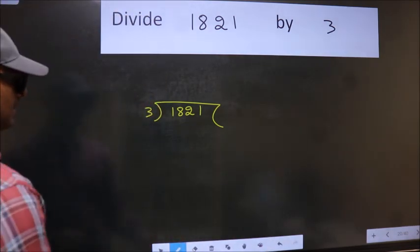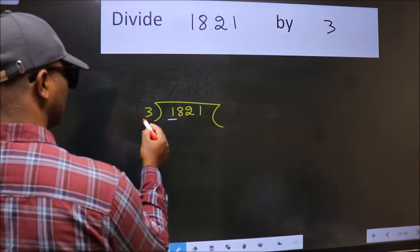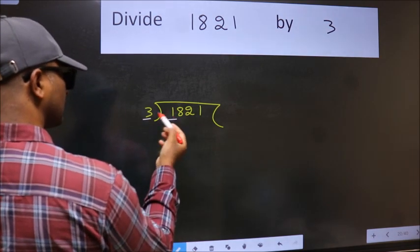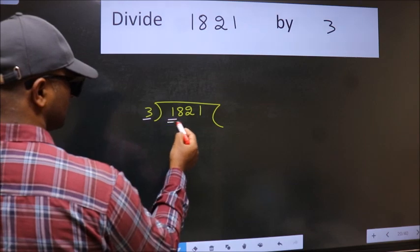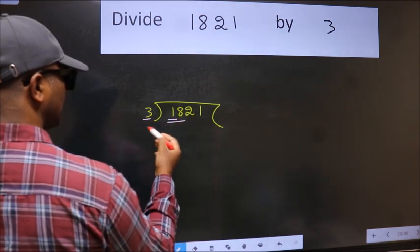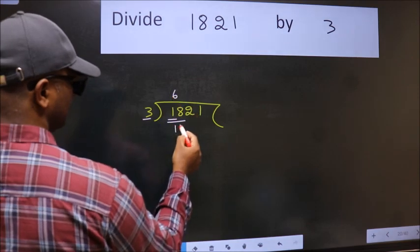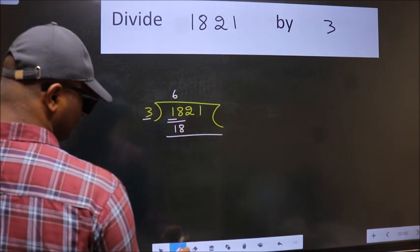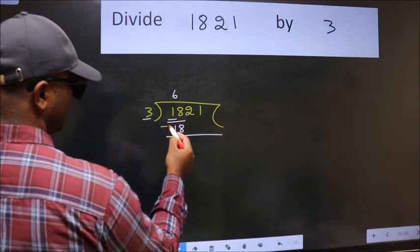Next, here we have 1 and here 3. 1 is smaller than 3. So we should take two numbers, 18. When do we get 18 in 3 table? 3, 6, 18. Now we should subtract. We get 0.